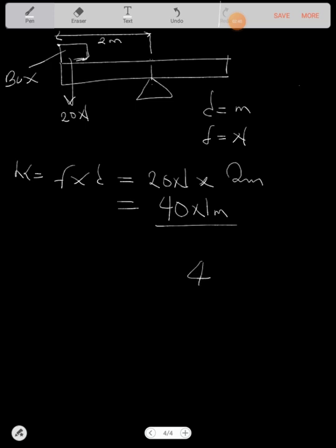So take note of the newtons. Many people, they like writing something like this, which is wrong. Totally wrong. This means divided by m. And in this case, we're not dividing, but we're multiplying. So you just write meter, so newton meter.